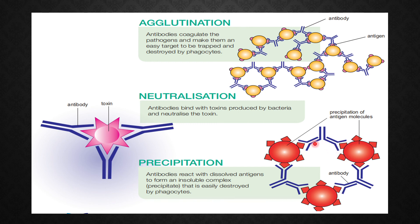Initially, those antigens are in the plasma and are soluble. Upon binding with the antibodies, they become insoluble, forming an insoluble complex — the precipitate. So initially the antigens are soluble, and upon binding they become insoluble.